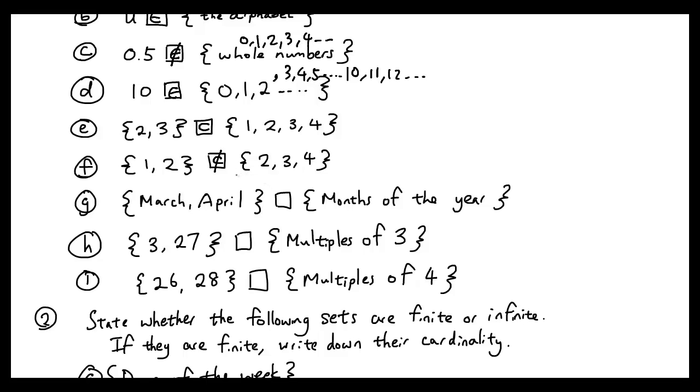{March, April} is a subset of months of the year. {3, 27}—these two numbers is a subset of multiples of 3, because multiples of 3 include 3, 6, 9, all the way to 27.